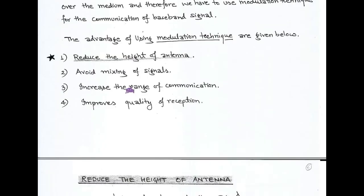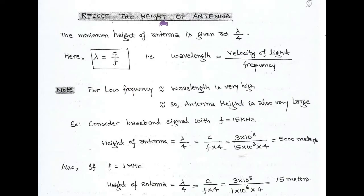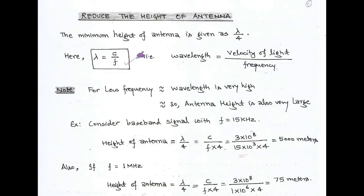The first advantage — reducing the height of antenna — is very important. As we know, the minimum height of antenna is given by λ/4. There is a relationship: wavelength λ equals velocity of light divided by frequency, that is c/f. We use this relationship to determine the height of antenna. Since the baseband or message signal is of very low frequency, the wavelength is very high, and correspondingly the antenna height is also very large.